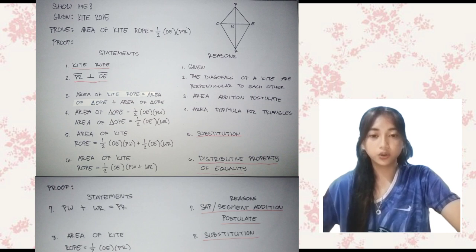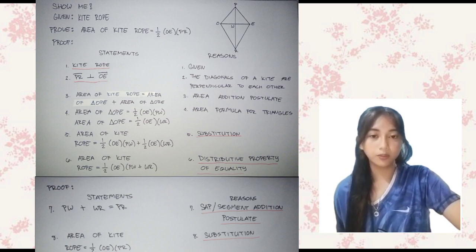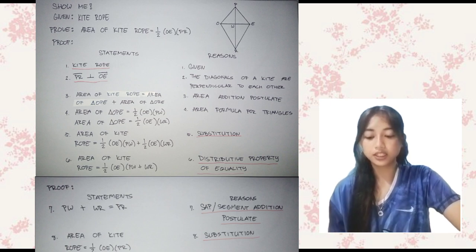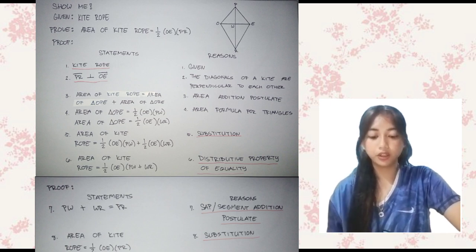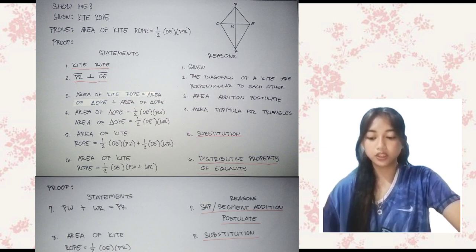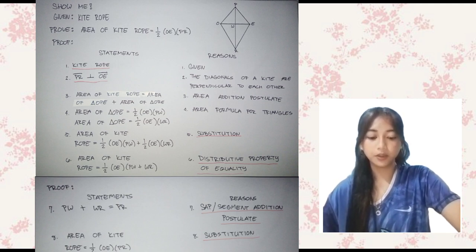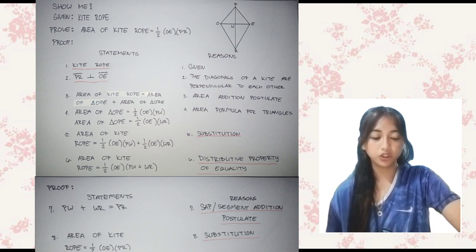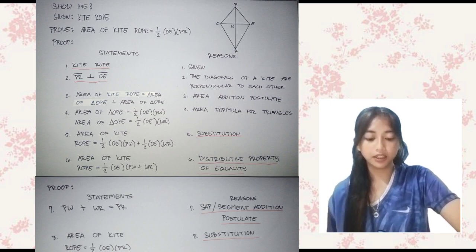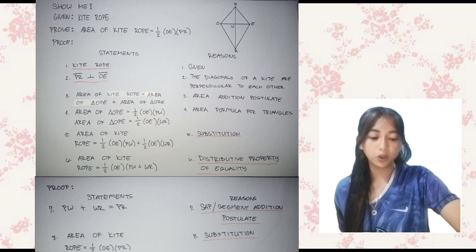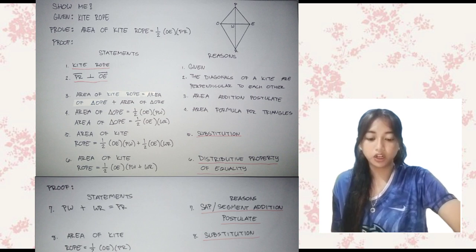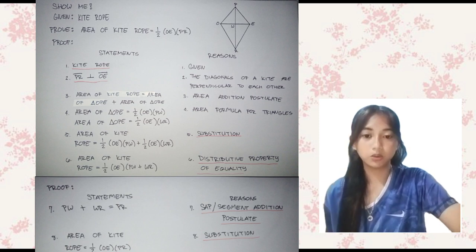Statement 6: Area of kite TROPE equals one-half OE times (PW + WR). Reason: Distributive Property of Equality. Statement 7: PW + WR equals PR. Reason: Segment Addition Postulate. Statement 8: Area of kite TROPE equals one-half OE times PR. Reason: Substitution.